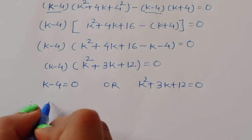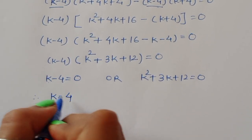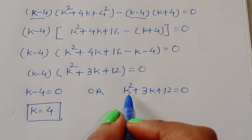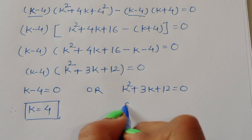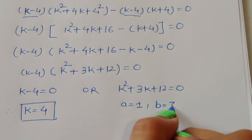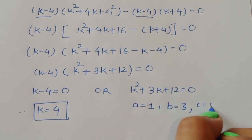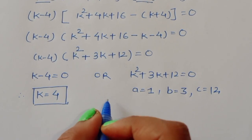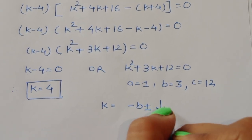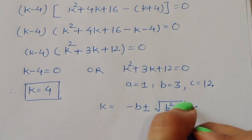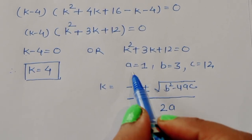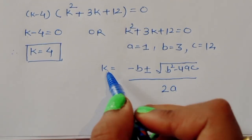From the first equation, k minus 4 equals 0, so k equals 4. This is the first value of k. For the second equation, k squared plus 3k plus 12 equals 0, we identify a equals 1, b equals 3, and c equals 12, and apply the quadratic formula: k equals minus b plus or minus square root of b squared minus 4ac, all divided by 2a.